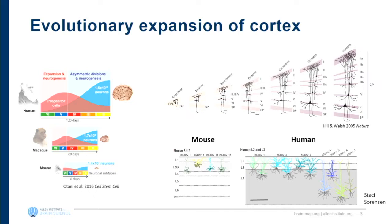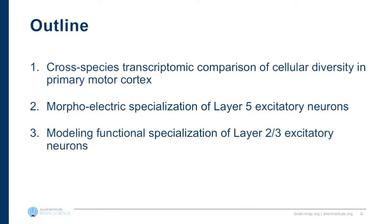This increase in the number of progenitors creating the different layers of cortex, particularly the superficial layers, leads to a slight thickening of cortex and also diversification of the types within it. Some of the work here has morphological reconstructions from layer 2-3 pyramidal neurons in the superficial layers, and you can see qualitatively that there's a broader diversity of these morphological types in human cortex than in the mouse.